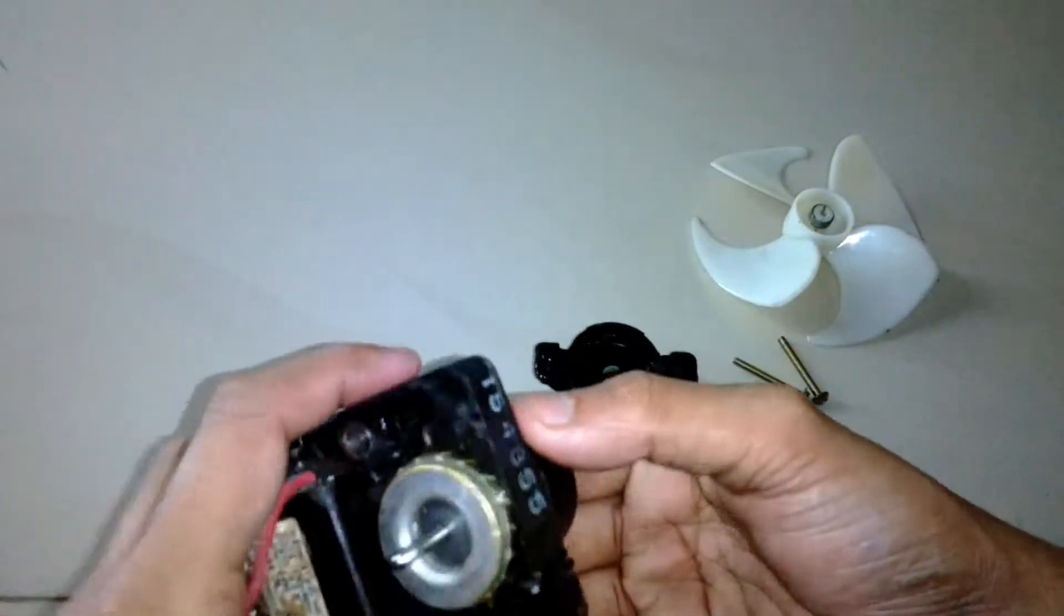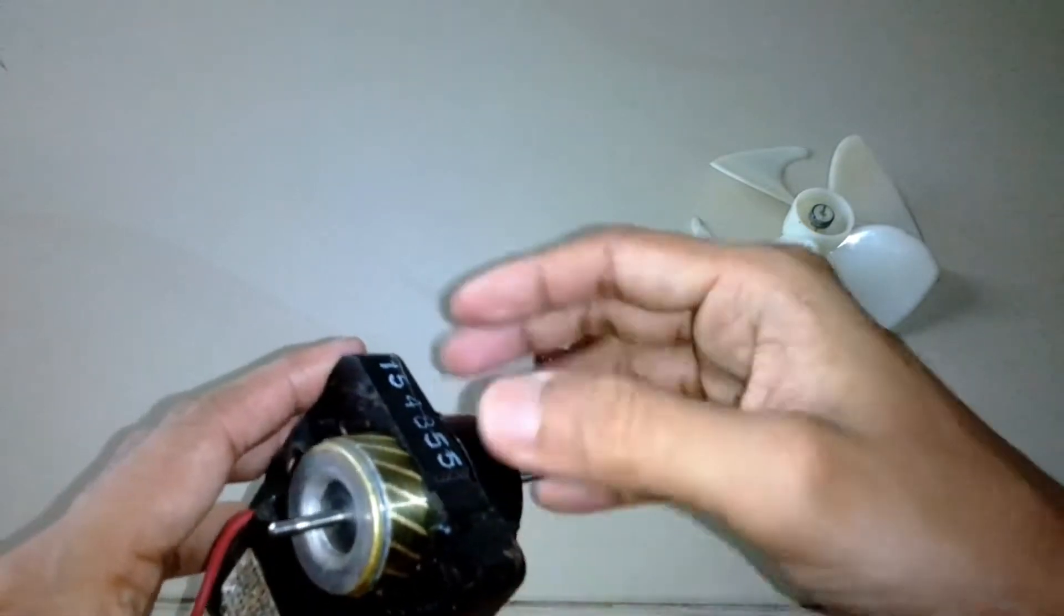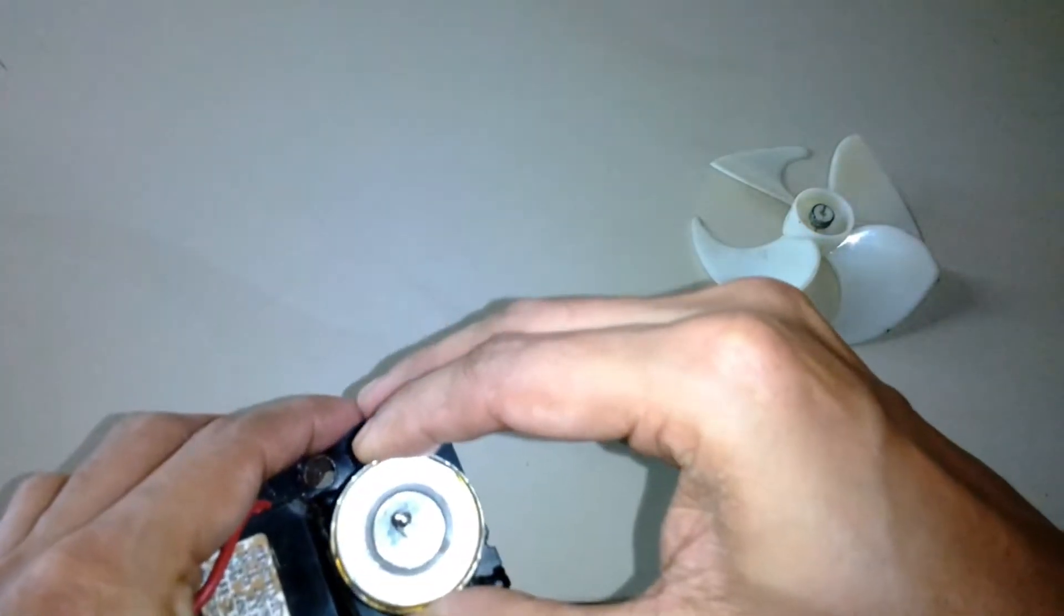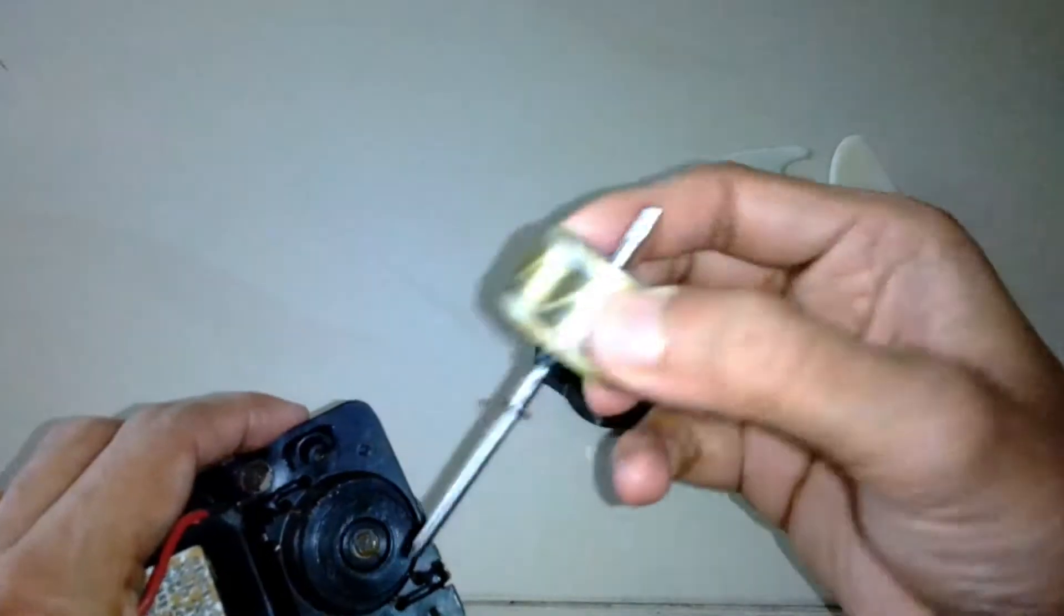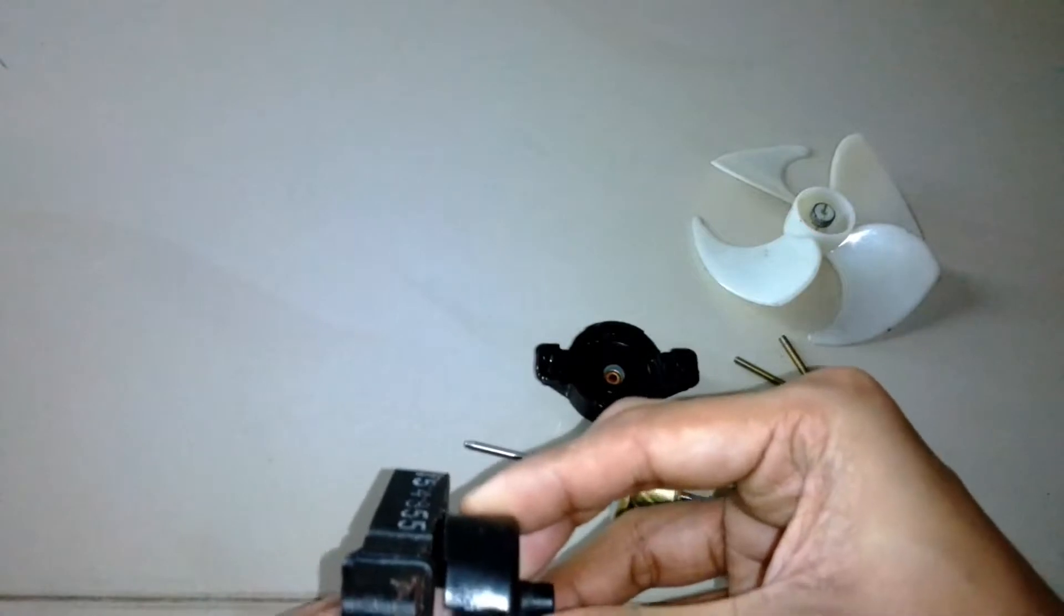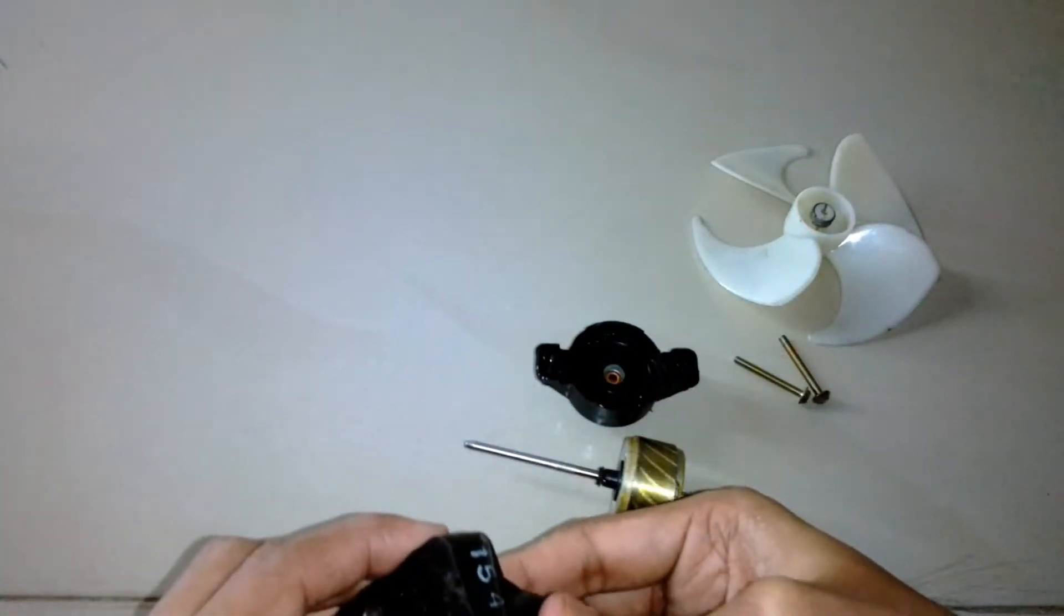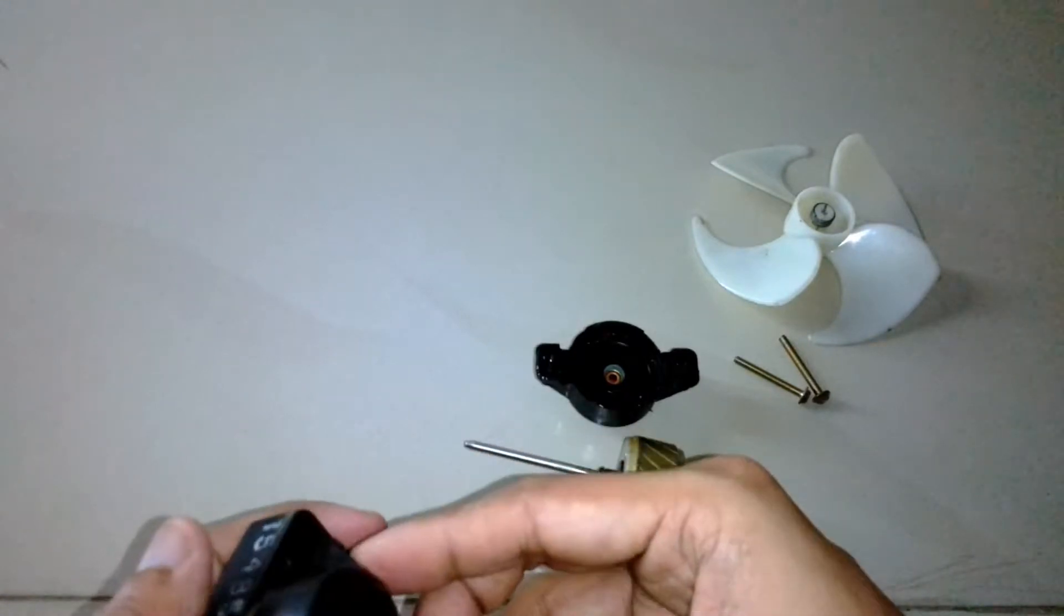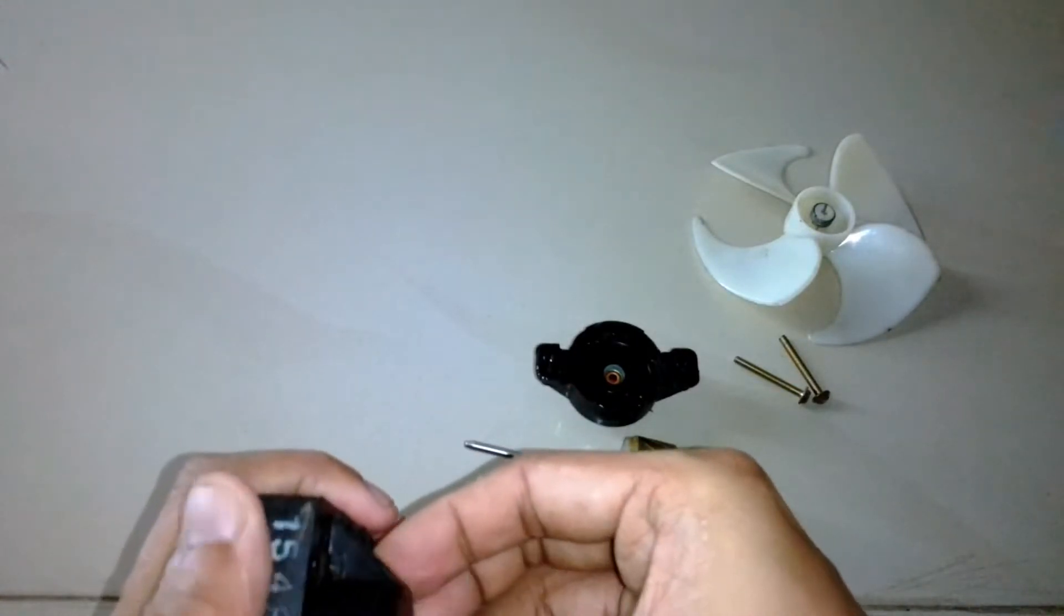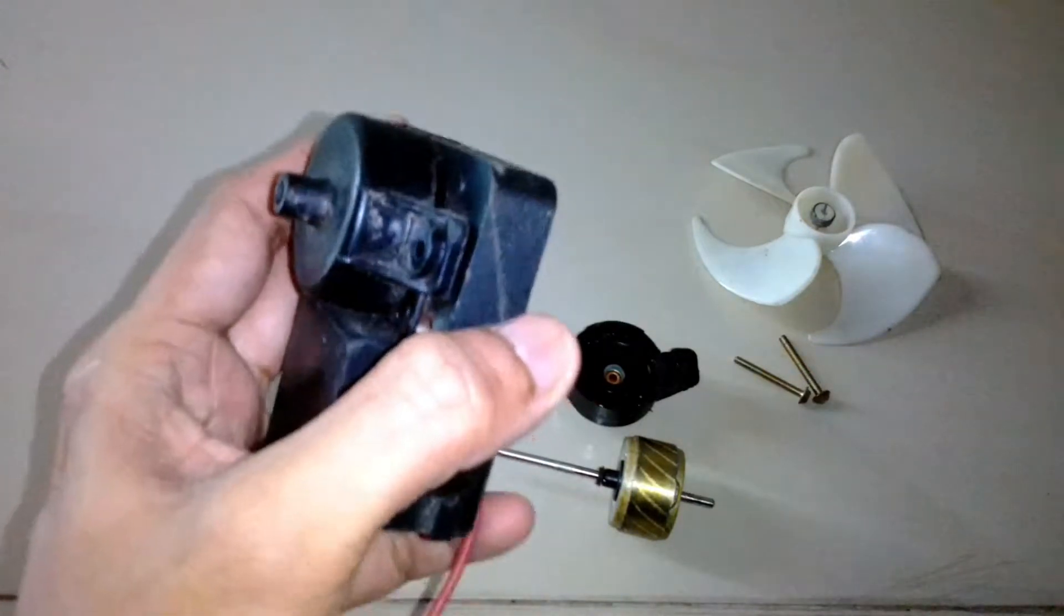It's just a basic squirrel cage rotor that we see on any other induction motor, whether it's an industrial motor or a household water pump. They all look the same, it's a squirrel cage.